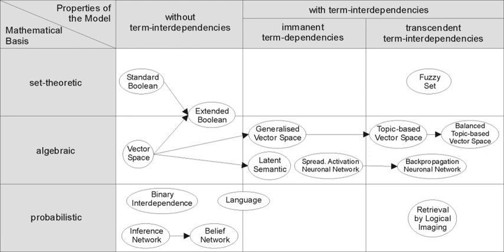In 1962, Cyril W. Cleverdon published early findings of the Cranfield studies, developing a model for IR system evaluation. His report was titled "Report on the Testing and Analysis of an Investigation into the Comparative Efficiency of Indexing Systems," published by the Cranfield Collection of Aeronautics, Cranfield, England, 1962. Also in 1962, Kent published Information Analysis and Retrieval.